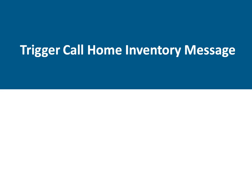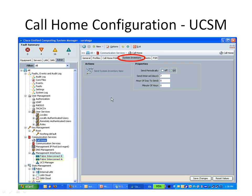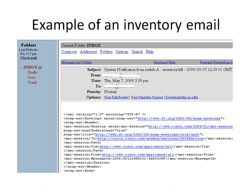The last step is how to trigger the Call Home inventory message. Click on the System Inventory tab. You can select the option to send a system inventory now, or you can configure the properties to send at a particular interval by clicking Send Periodically On and providing the interval in days, hours, and minutes, then click Save Changes. Once you configure all this, you can generate the inventory email — here is an example of the inventory email.